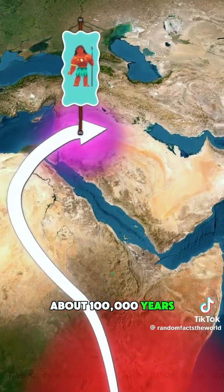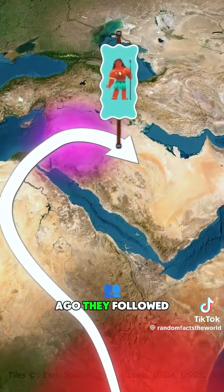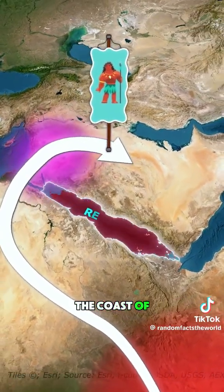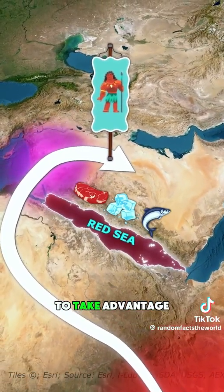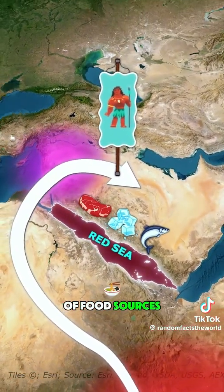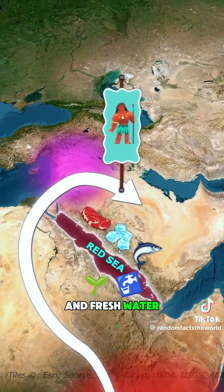About 100,000 years ago, they followed the coast of the Red Sea to take advantage of food sources and fresh water.